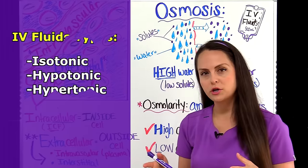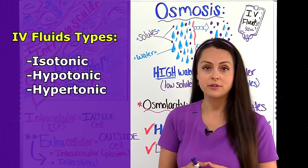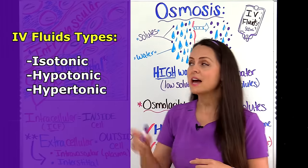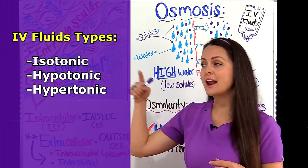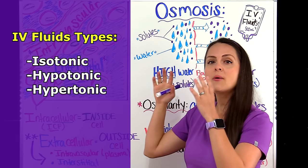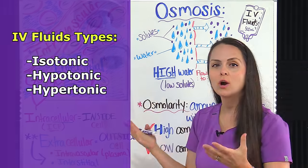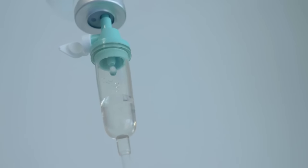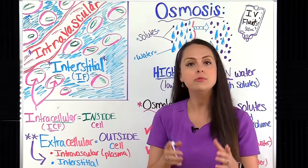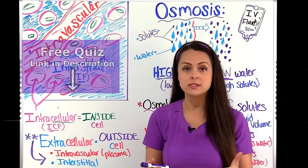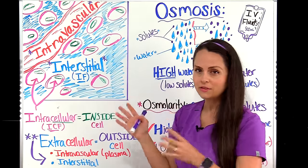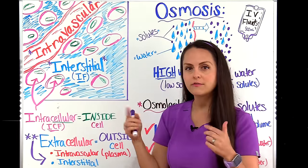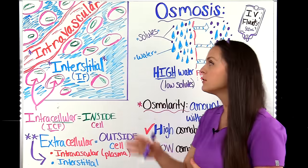As a nurse, you want to be familiar with the different types of IV fluids, such as isotonic, hypotonic, and hypertonic. You also want to know how they work once administered to the body and what you need to monitor for while your patient is receiving these fluids. But before we go over these different types of fluids, let's first review the different body fluid compartments.